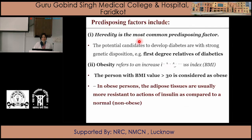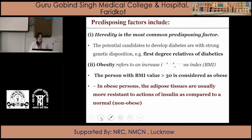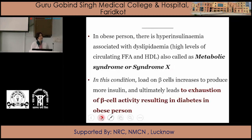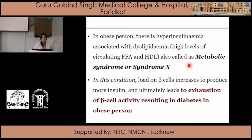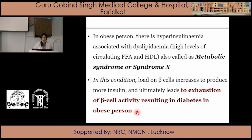The main predisposing factor is heredity, which plays a strong positive correlation with diabetic patients. Second is obesity — in Type 2 diabetes mellitus patients, if the BMI is more than 30, those persons are considered obese. In obese persons, adipose tissues are usually resistant to the actions of insulin, leading to hyperinsulinemia along with dyslipidemia — that is, high levels of circulating free fatty acids with low HDL — called metabolic syndrome or Syndrome X. This increases the load on beta cells, ultimately leading to their exhaustion and precipitation of diabetes.